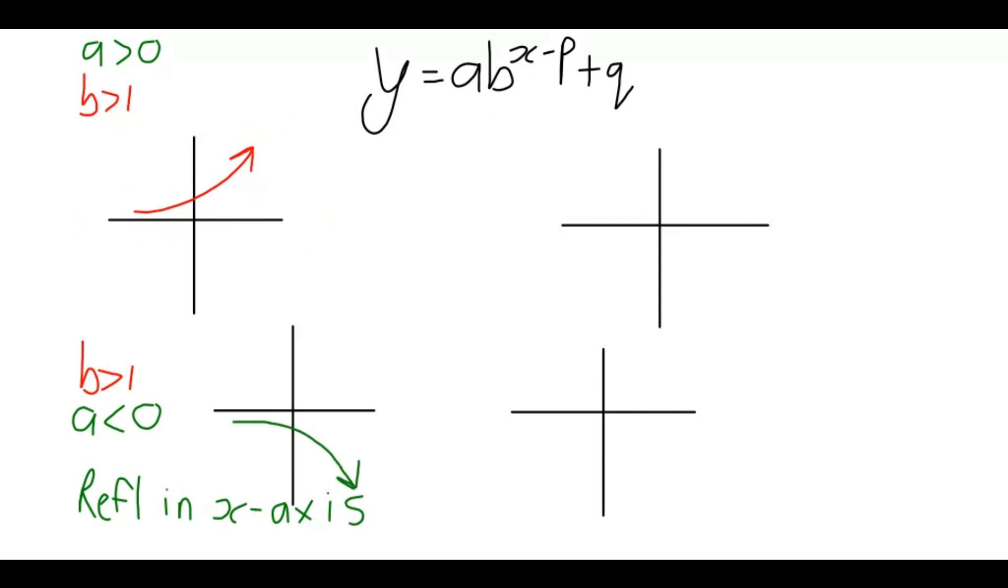It's a reflection of the original function in the x-axis. Now we're on the other side. Now, we're working with where the b is between 0 and 1. Now, what does that mean? That's basically just a fraction. Just remember that. So, the b is a fraction. Sometimes, they can have y equals a half to the power x. That's the example.